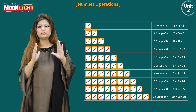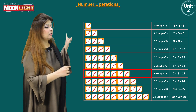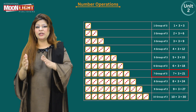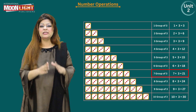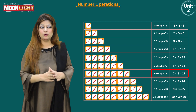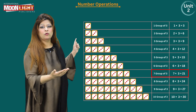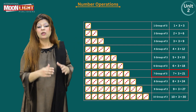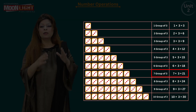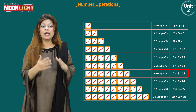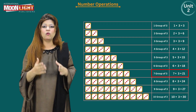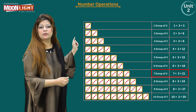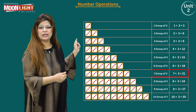Seven groups of three means seven times three, or seven multiplied by three. You can count the dots, or you can take the previous answer of 18 and add three more to get 21. Seven times three is equals to 21.